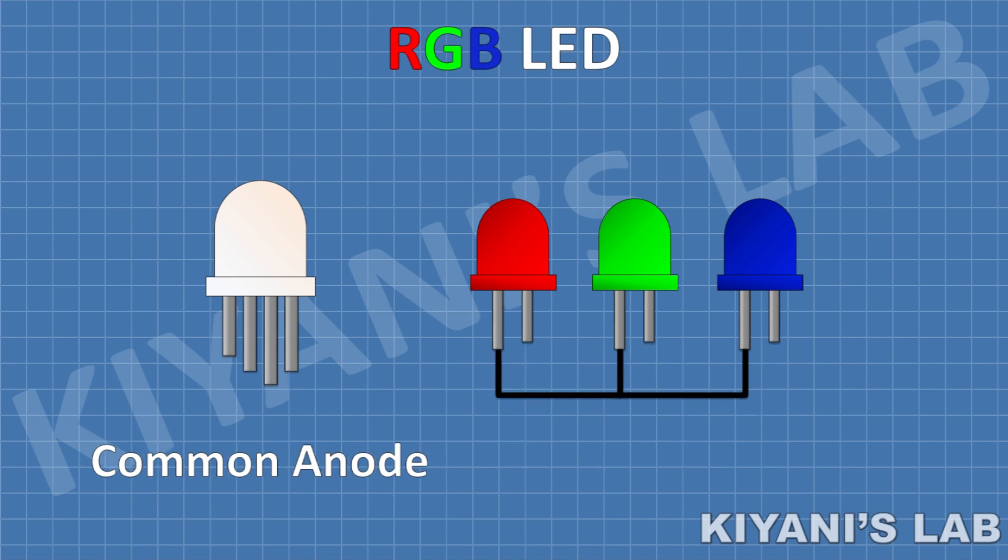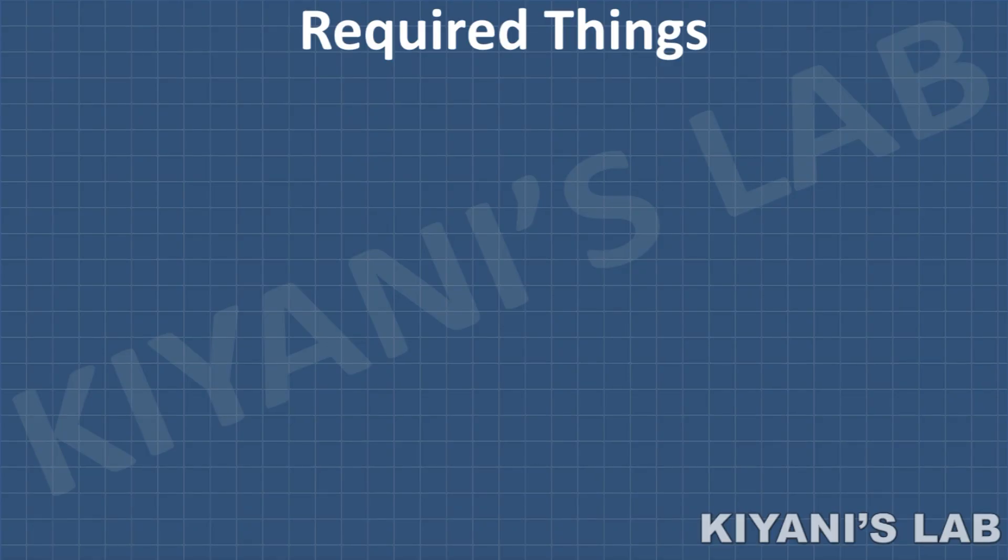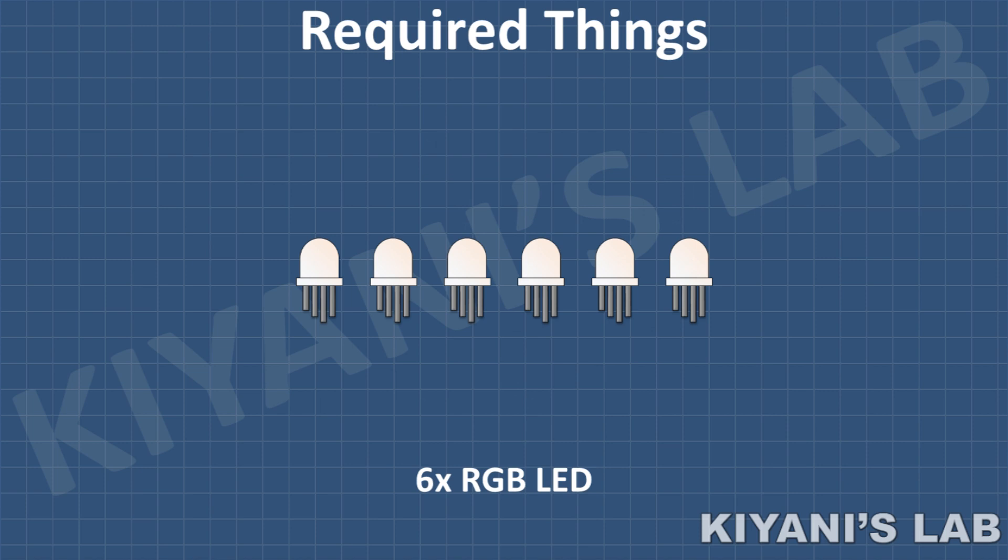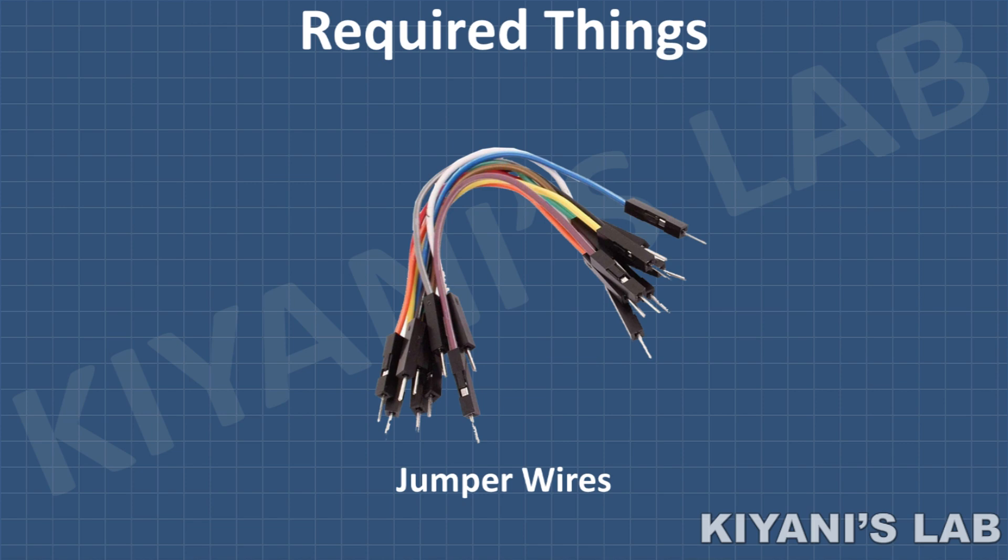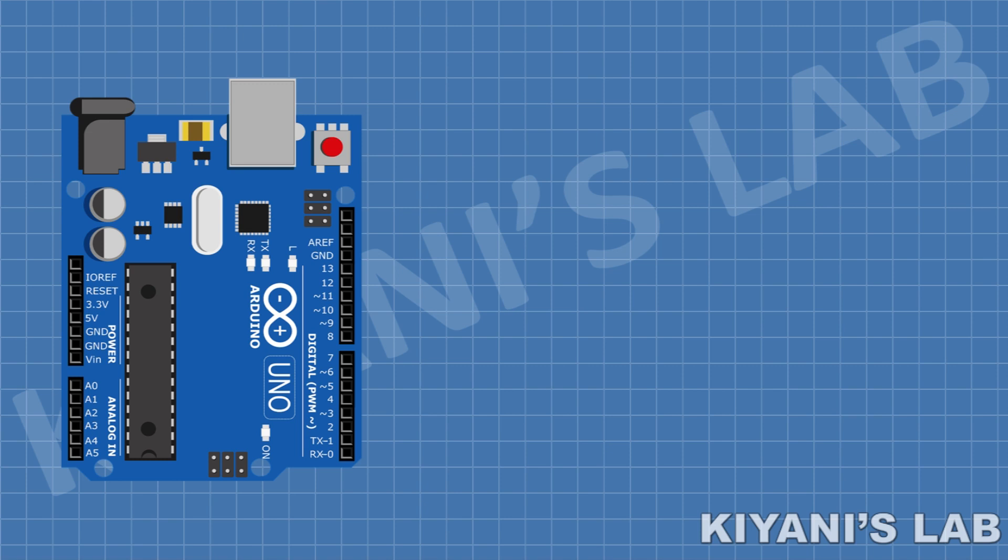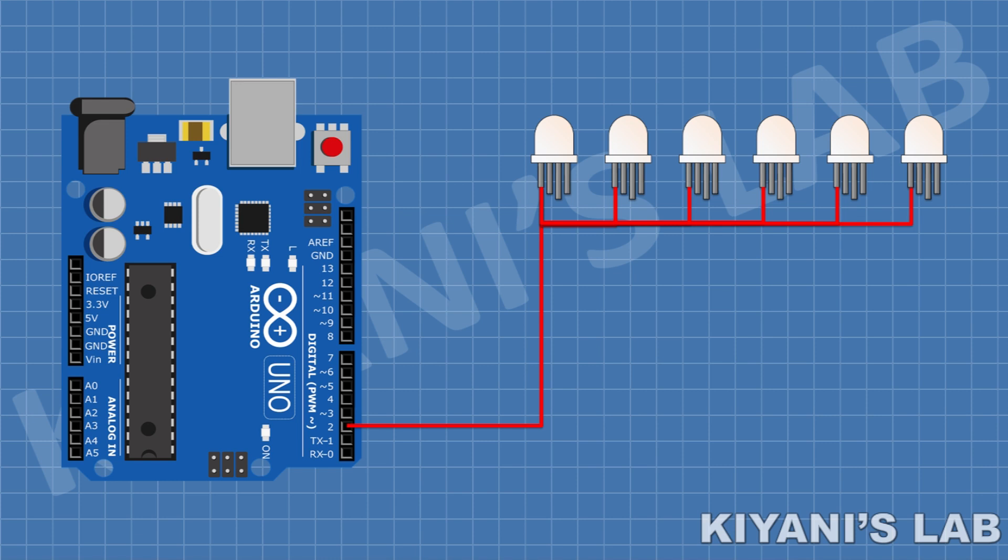So we are using a common anode RGB LED. Now let's do all the connections and complete this project. So these are all the components we are going to use. First connect Arduino, after that connect six RGB LEDs and connect their red pins to pin D2 of Arduino, their green pins to pin D3 of Arduino, and their blue pins to pin D4 of Arduino.